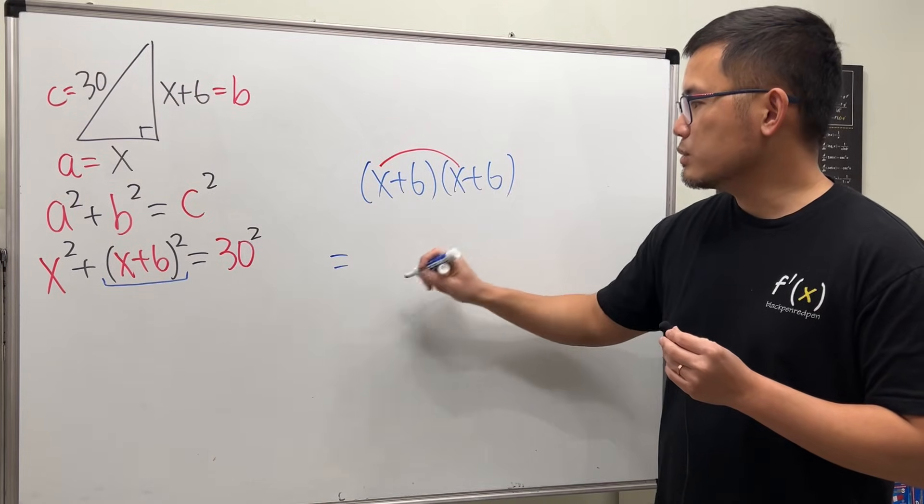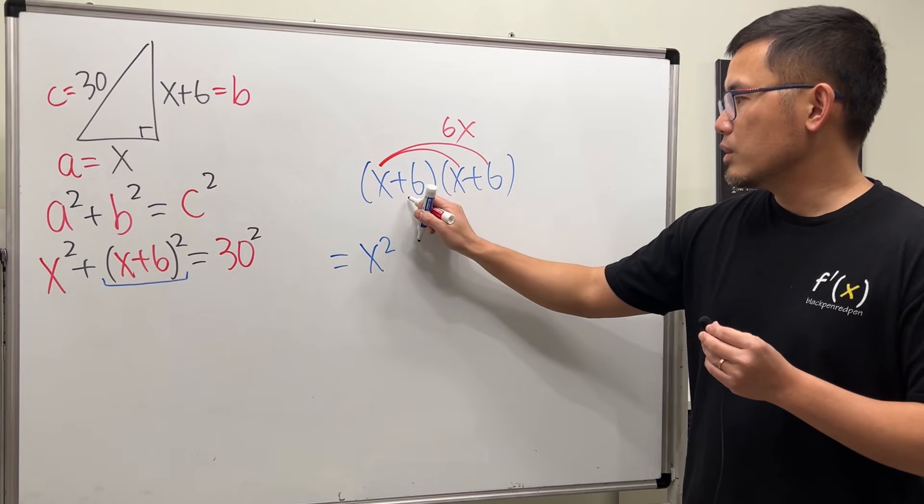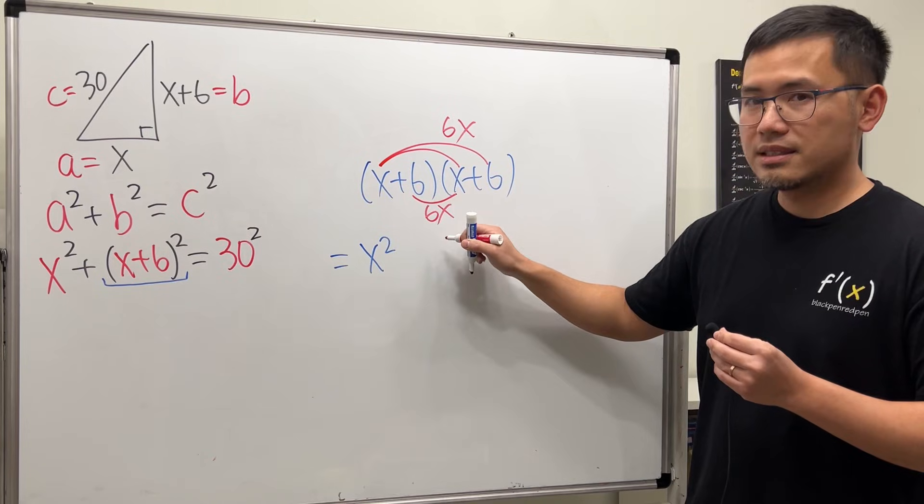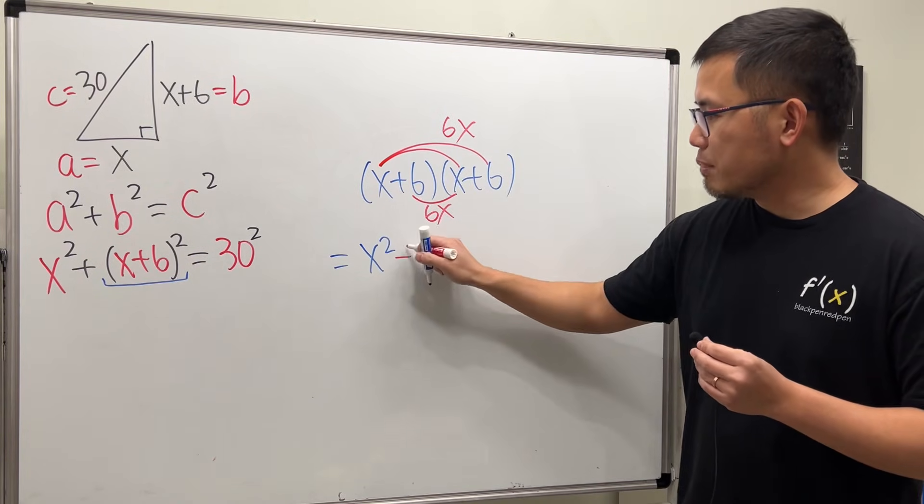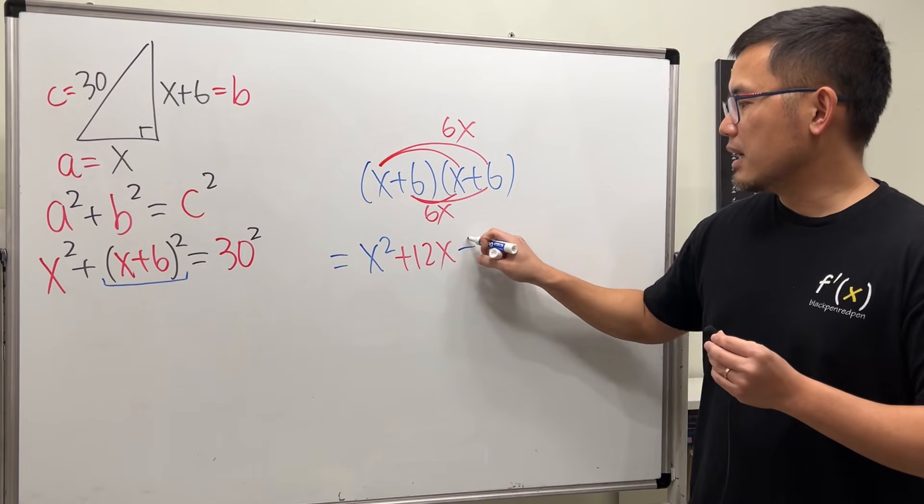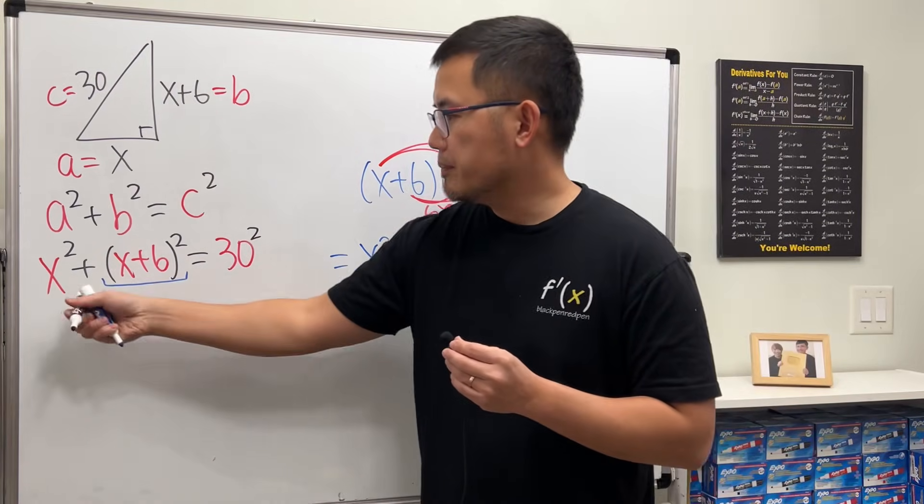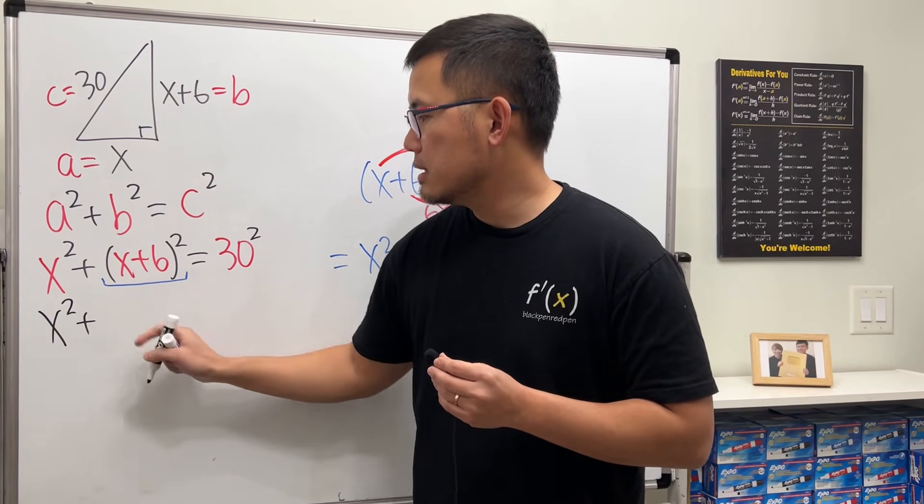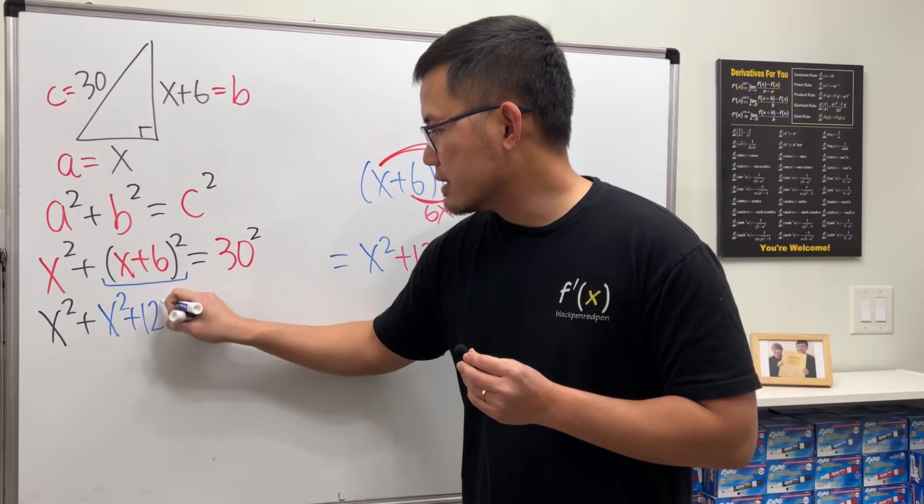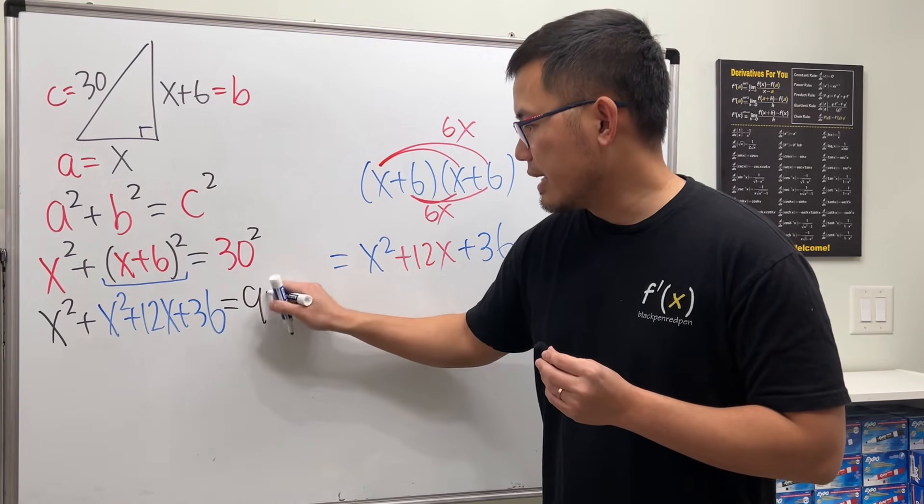So we get x times x, which is x², and then x times 6 is 6x, and then we're done with that. So 6 times x right here, we have another 6x. Together, we have +12x. Lastly, 6 times 6, we get +36. So we can go back here and say here we have that x² plus this is all this now. x² + 12x + 36, and that's equal to 30², which is 900.